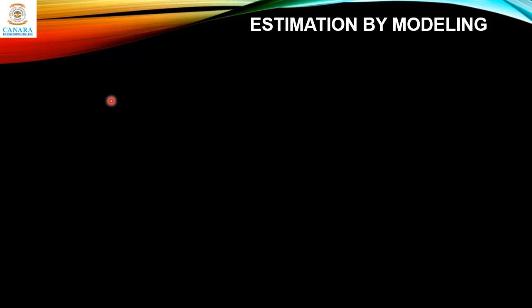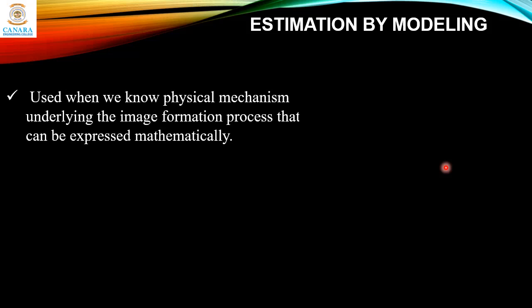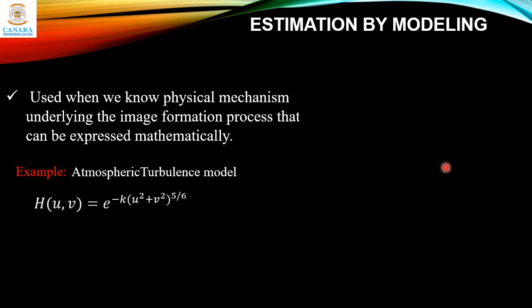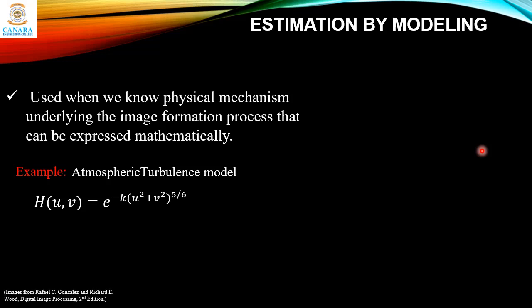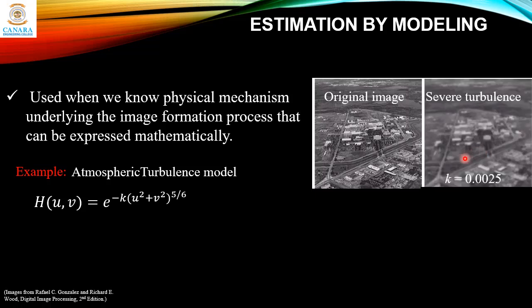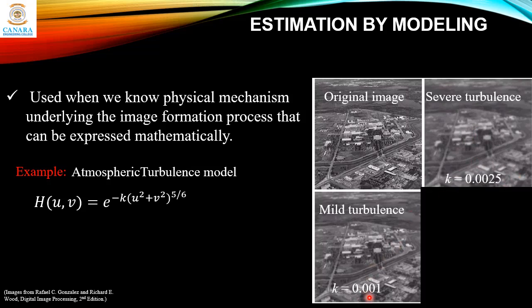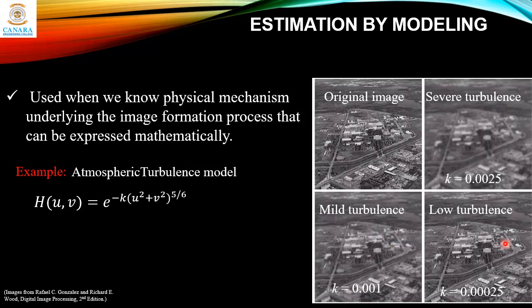The third type is estimation by modeling, used when we know the physical mechanism underlying the image formation process that can be expressed mathematically. A simple example is the atmospheric turbulence model: H(u,v) = e^(−k(u²+v²)^(5/6)). The value of k affects the image appearance — with k = 0.0025 producing a severe turbulence effect, k = 0.001 producing mild turbulence, and a lower value producing a low turbulence image.